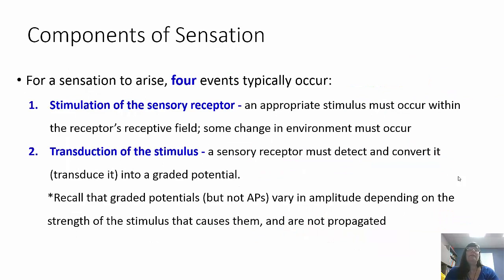Four events usually occur when sensation arises. First, you have the stimulation of the sensory receptor — the stimulus is going to be picked up by that particular receptor. A change in the environment has to occur, whether external or internal, and the change has to occur within that receptor's field. Then that stimulus has to be transduced — the sensory receptor has to detect it and convert it into a graded potential.